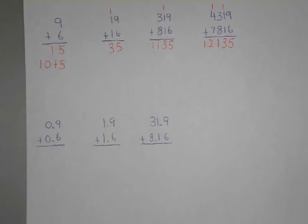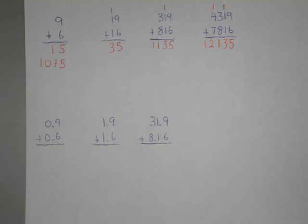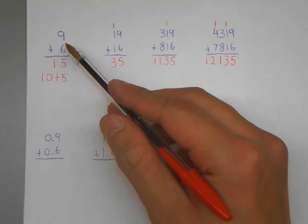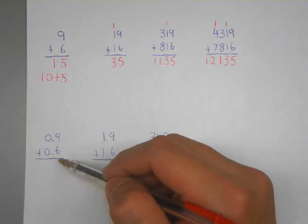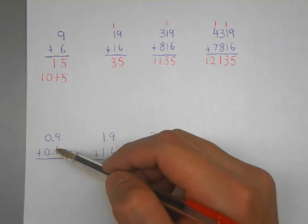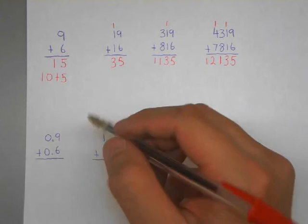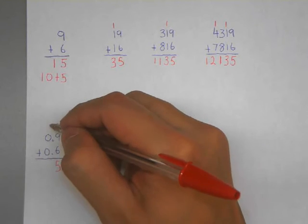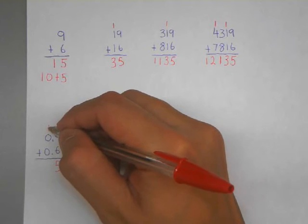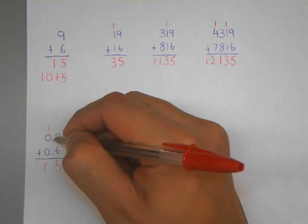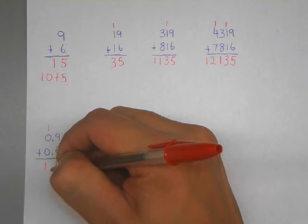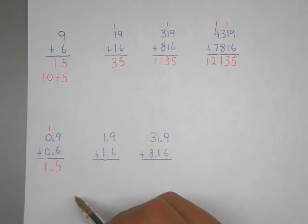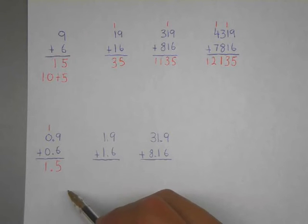Now we put things into decimals. Are things going to be different? We've changed our problem from 9 plus 6 to 0.9 plus 0.6. We do the exact same thing: 9 plus 6 gives us 5, and the 1 goes on top — we've reached that 10 plateau. 1 plus 0 plus 0 is 1. The key here is that the decimal point needs to follow all the way down. So instead of 15, we have 1.5 as our answer. It is very important to align your decimals, or everything will be messed up.